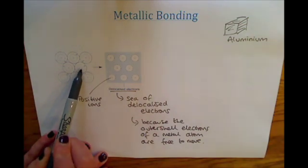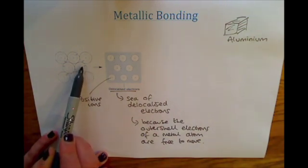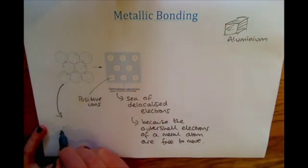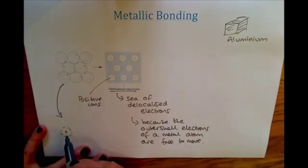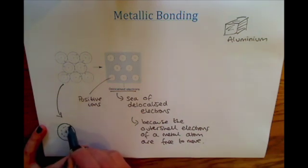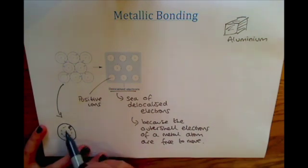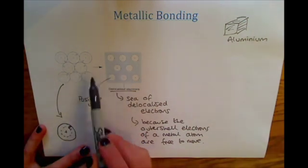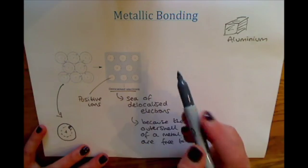You can see it depicted with a positive center and electrons around the outside. You might see it drawn like this: a positive ion in the center and around the outside just the 'e' for electron, showing that those outer shell electrons are then free to move throughout the metal between the positive ions.